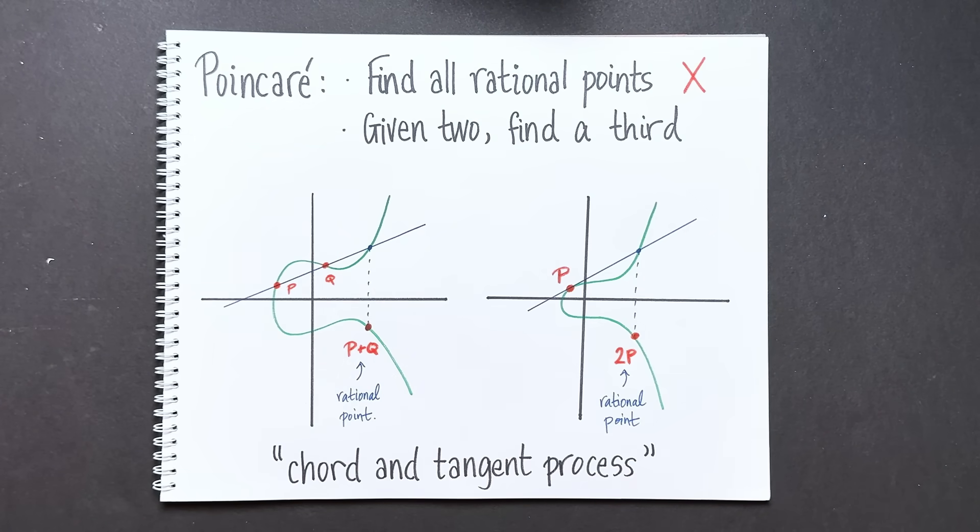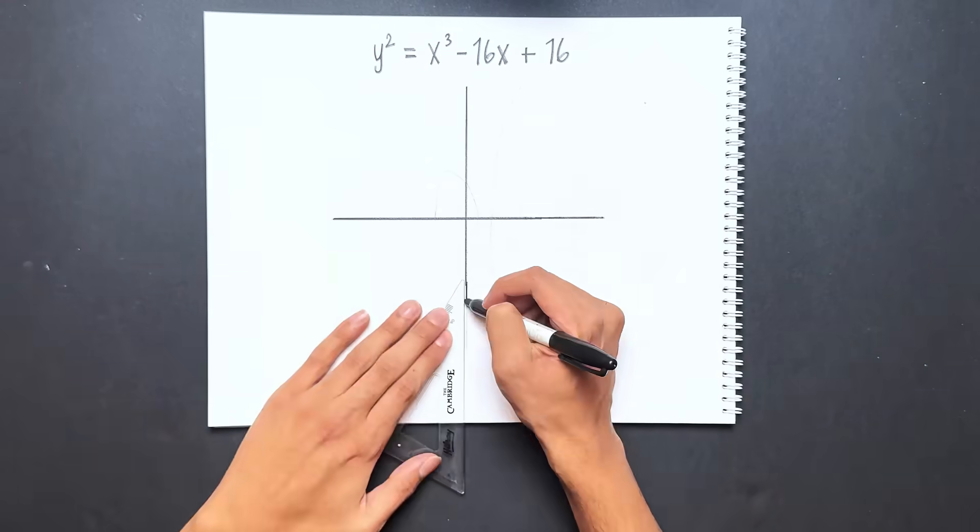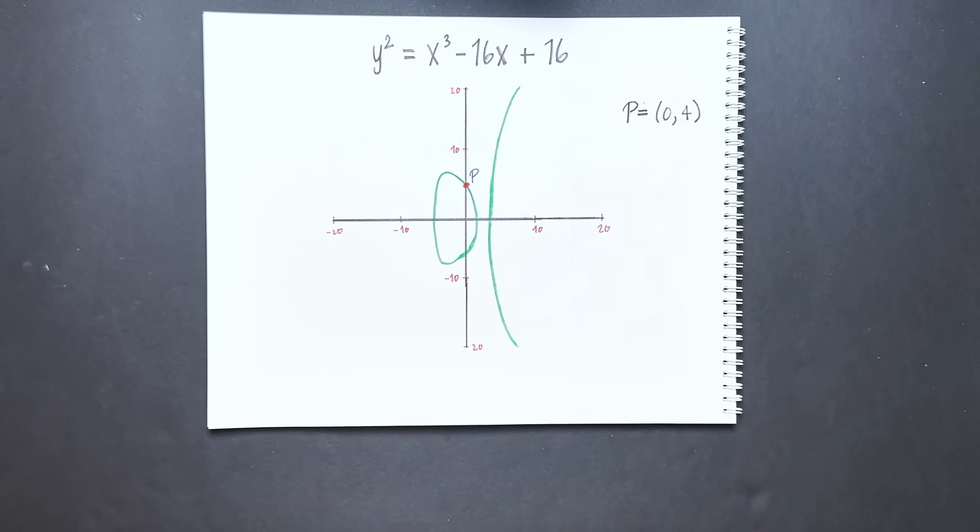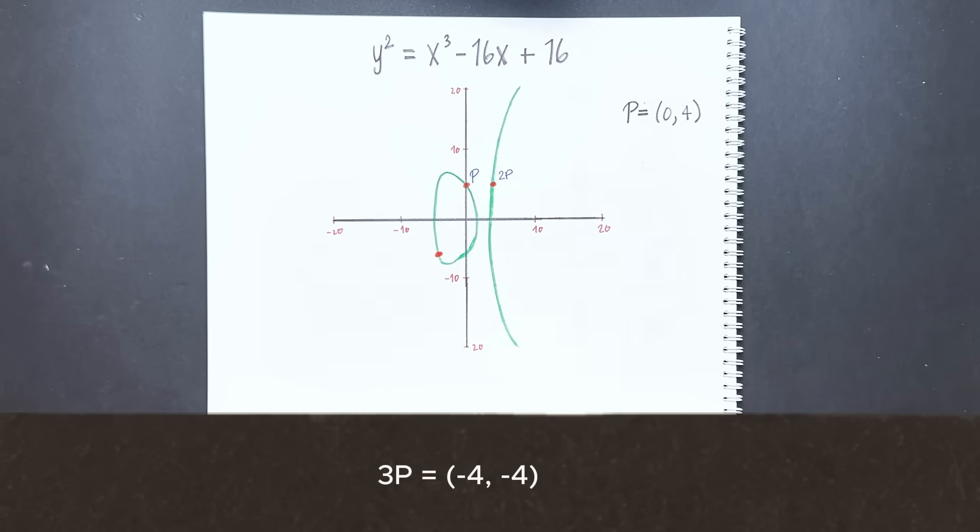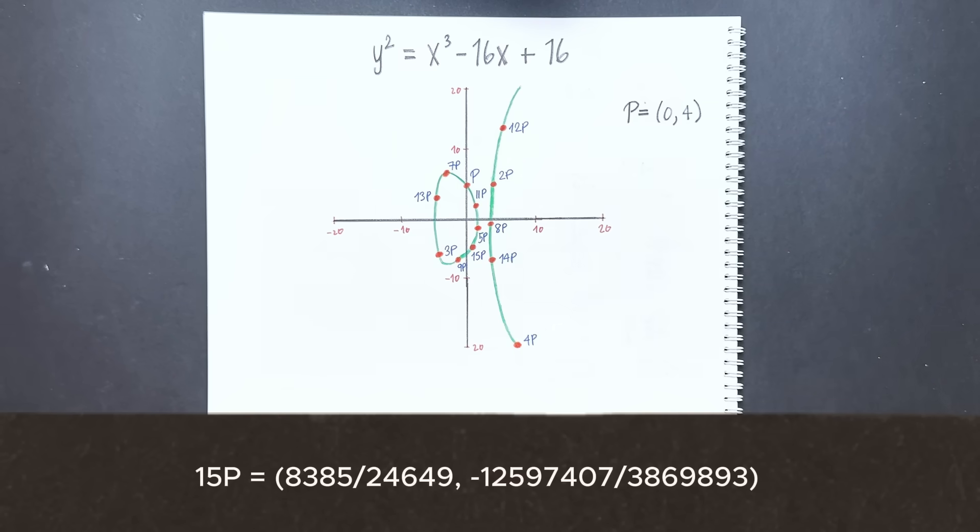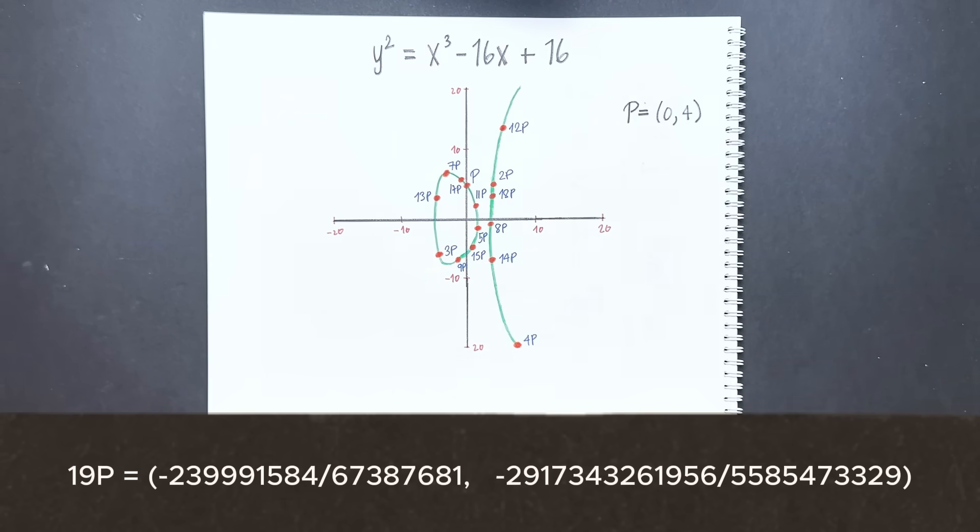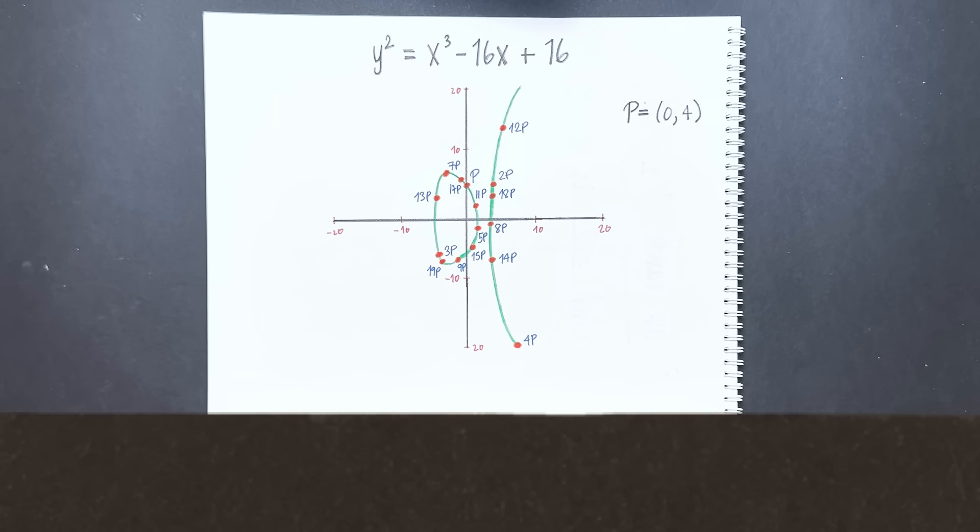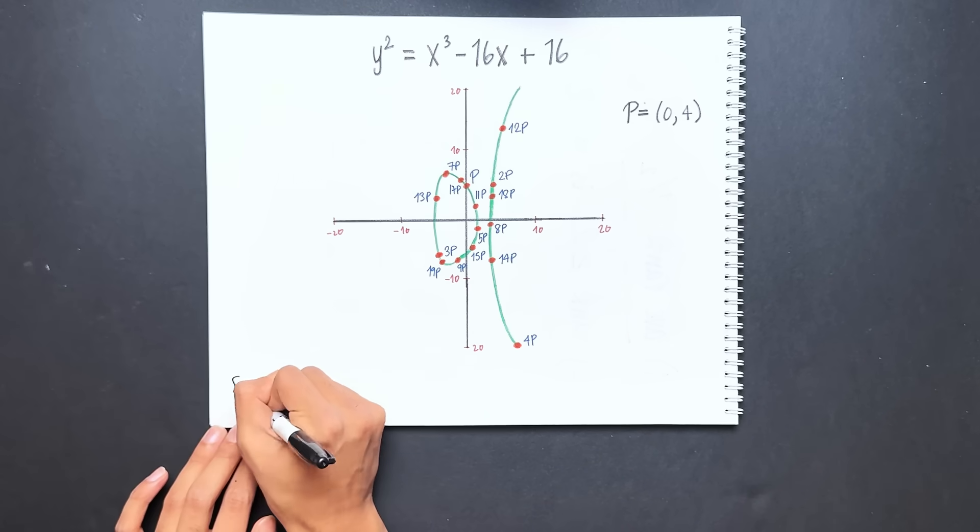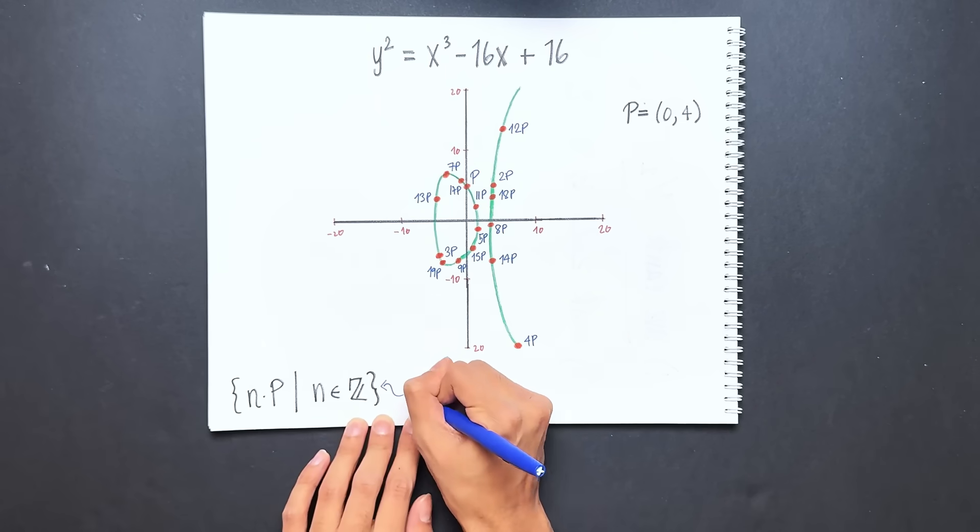This method might seem simple, but it's astonishingly powerful. Consider this elliptic curve with this graph. Look at the point P equals zero comma one. I'm going to keep adding it to itself and see what happens. These points have really large x and y coordinates - you couldn't have just guessed these solutions by inspection. You really need the chord and tangent process to find them. But there's something even more miraculous going on: it turns out that if you take all the integer multiples of the point P, it actually gives you the entire set of rational points on the curve.